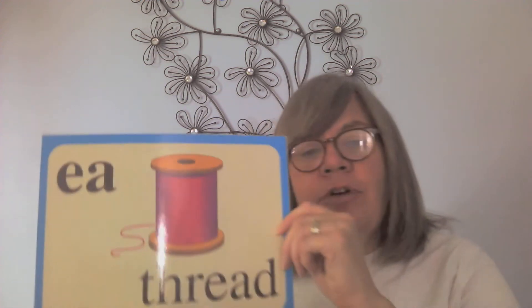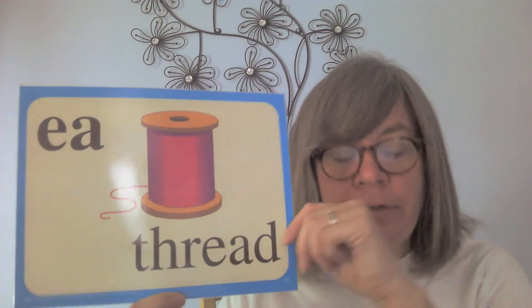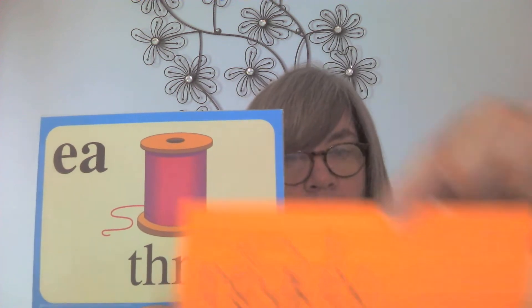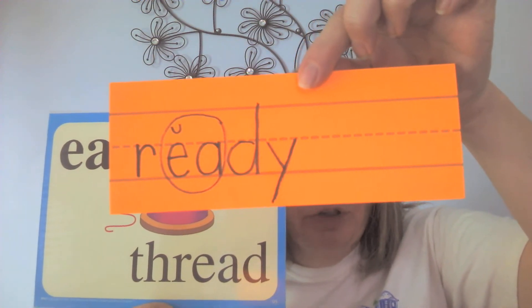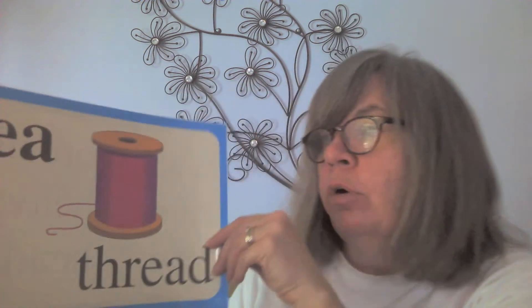Now let's put the card down and see if we can remember it. Ready? Three, two, one, go. R, E, A, D, Y. What does that spell? Ready! Let's look at some more words that have EA making the /ĕ/ sound, like in 'thread.' You'll have to remember 'ready' on your seatwork today.